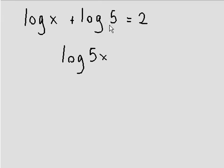So x times 5 is 5x and the 2 is still on that side over there, on the right side of the equation. Okay, so right now I just have log of 5x is equal to 2.